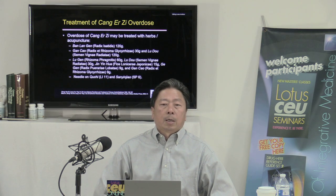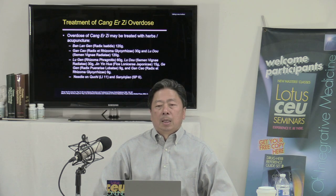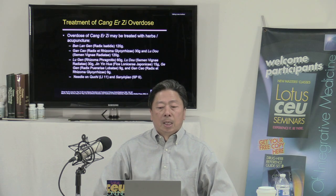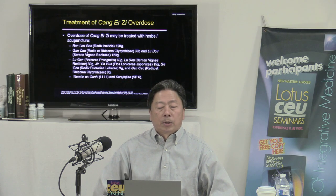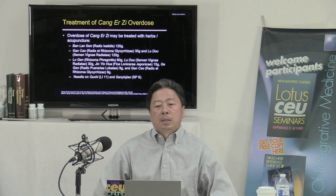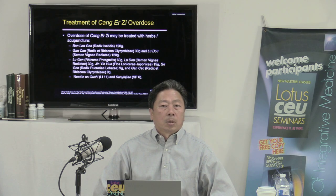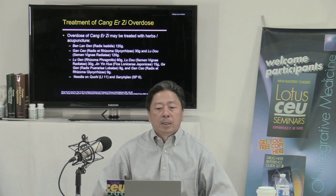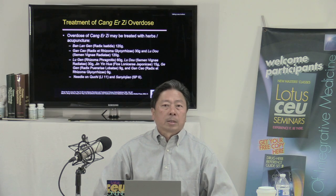You need to know what herb may cause what side effect, what herbs have what contraindications, and if worst case scenario they do occur, how to take care of it. Cang Er Zi (Xanthium fruit) is one of those examples. I've been in the U.S. practicing for about 25 to 30 years and doing a lot of consultation to practitioners for the same amount of time. I'm not aware of one single event of Cang Er Zi toxicity here in the United States. I think overall we as the TCM community have done a great job — herb companies properly processing the herb and TCM practitioners properly identifying the diagnosis and using the herb.